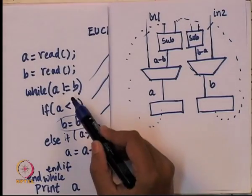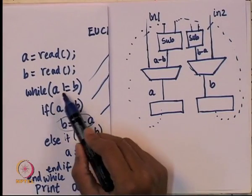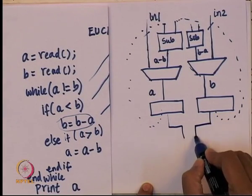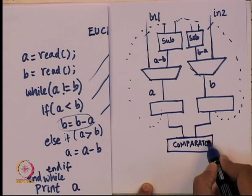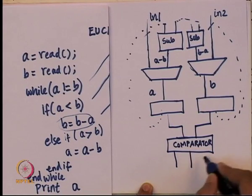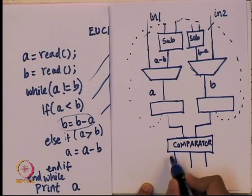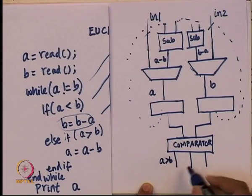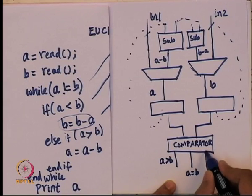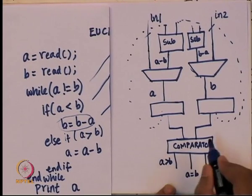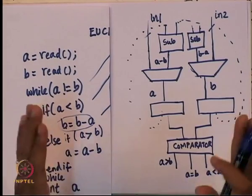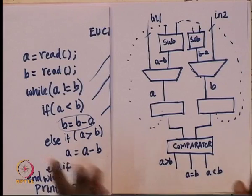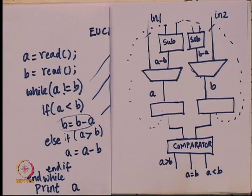We need a comparator that takes A and B and gives three single-bit output lines: one line on if A is greater than B, the middle bit on if A is equal to B, and the rightmost bit on if A is less than B. One of these output lines will definitely be on because given two numbers A and B, one of those three conditions must hold. We seem to have various rudimentary things in place, though a few things are still missing.